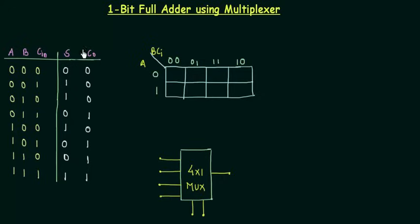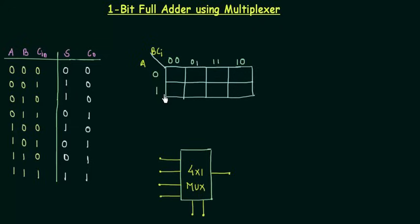If there is any carry, the Cout will reflect it. We already know how the output S and Cout are evaluated. The next step is to look at the number of variables. We are having three variables: A, B, and Cin. Depending on three variables, I will make an 8-cell K-map.